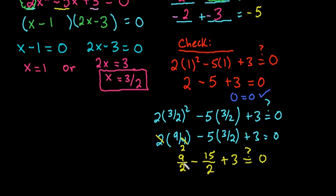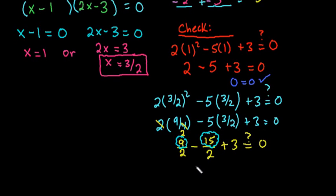Remember with adding fractions, you add the top numbers as long as the denominators are the same. Since they're both 2, I just add these two together. So I'm really doing 9 plus negative 15, or 9 minus 15, which gives me negative 6. And negative 6 divided by 2 is negative 3. So negative 3 plus 3 gives me 0, so this does work.